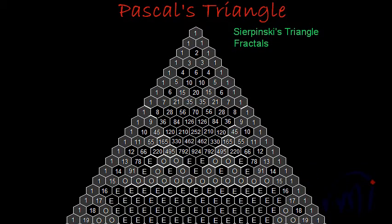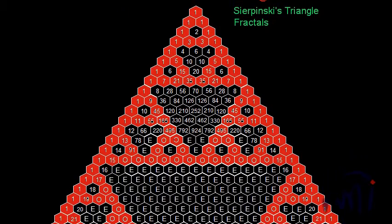This was one more property of Pascal's triangle. If I change the color to red, it is going to look something like this — I think this is a clearer view.